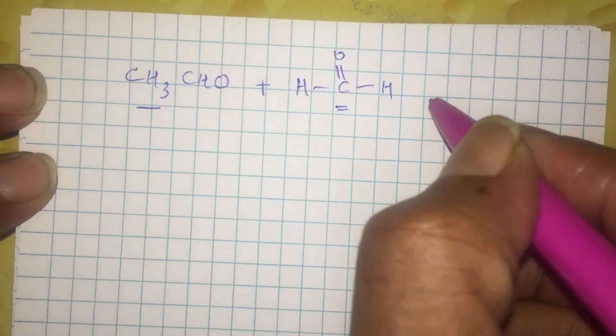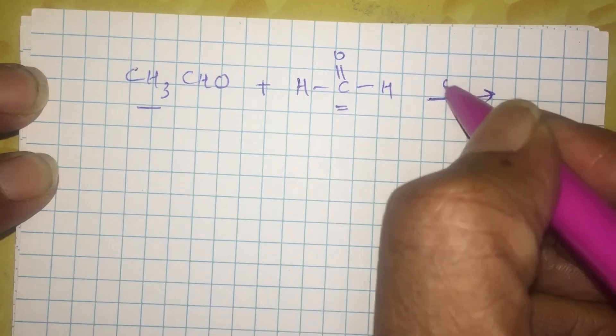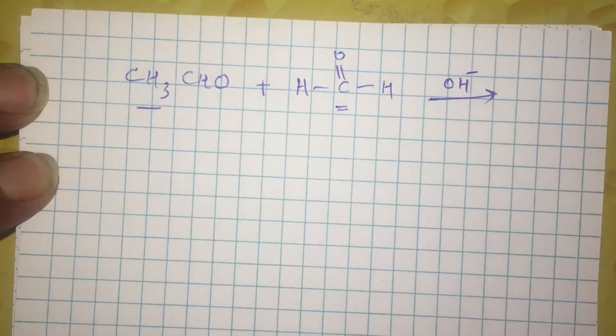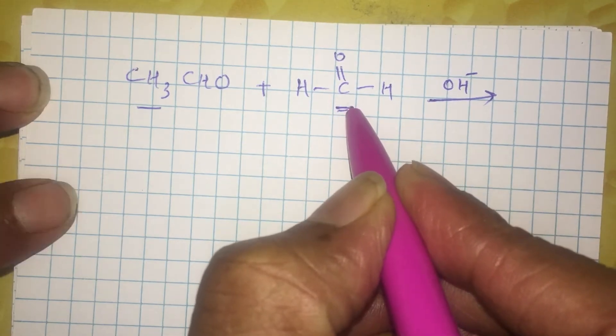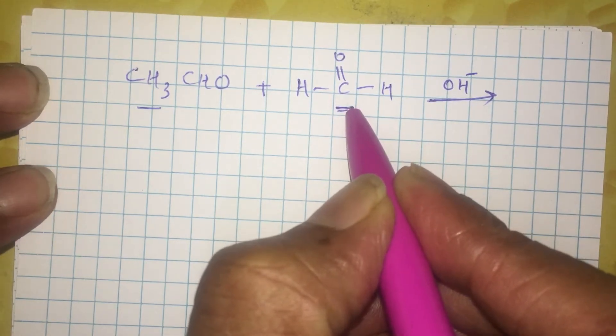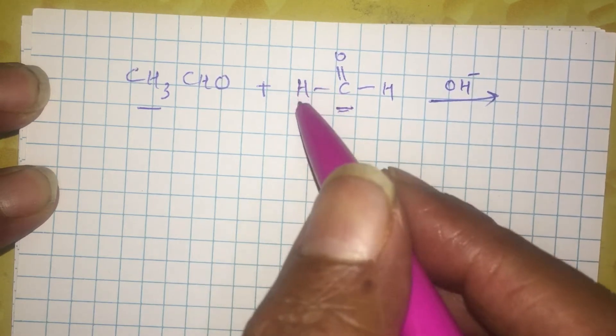And if you try to react them, this mixture in a basic medium, then of course the formaldehyde is not able to make any enol as it does not have any alpha hydrogens.